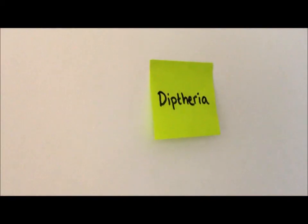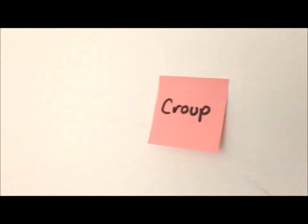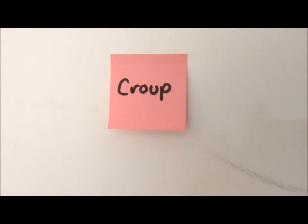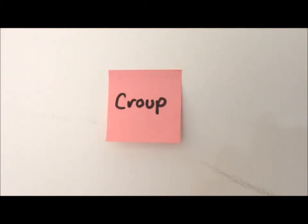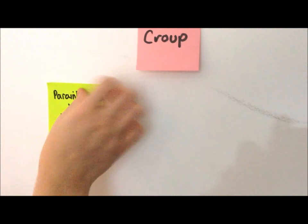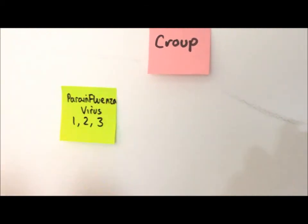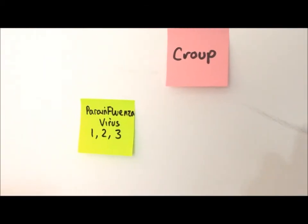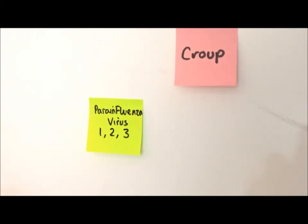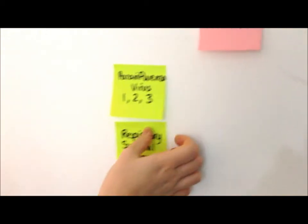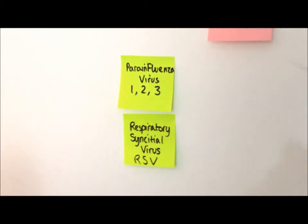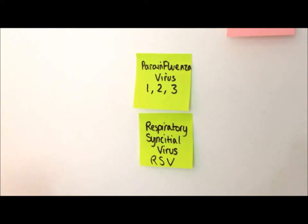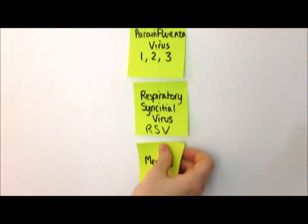Starting with croup, the common causes are parainfluenza virus 1, 2 and 3, respiratory syncytial virus and measles, but measles is a rare cause due to the vaccination programme.